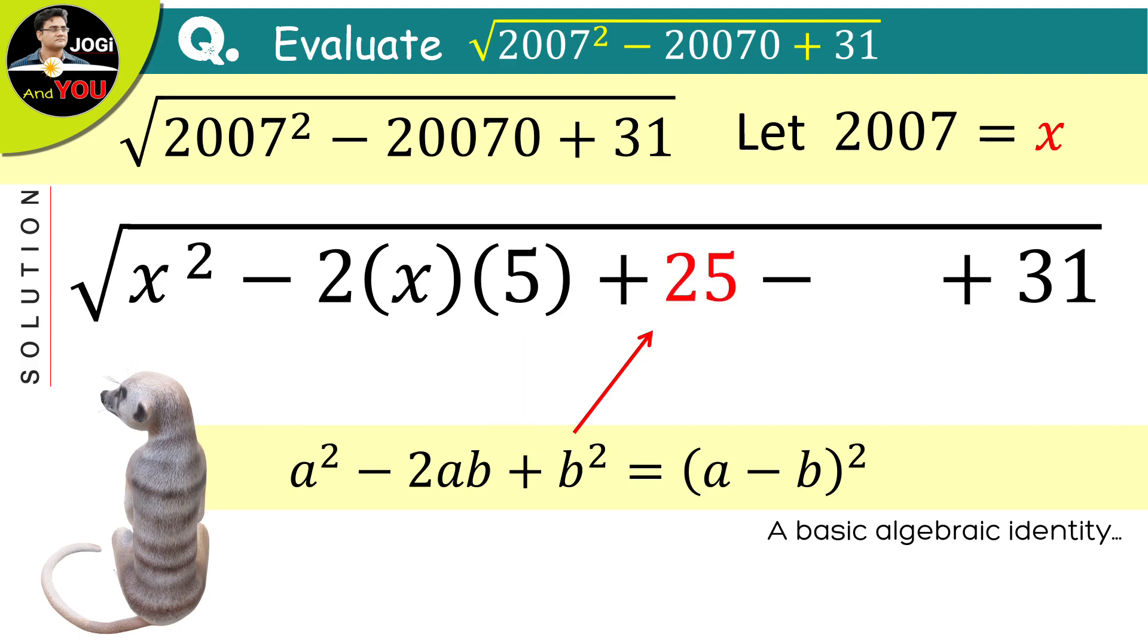But, by doing this, the actual value of your expression will change which is not mathematically accepted and it is not correct. So to balance it out, we will subtract 25 once from here. So that, the value of the original expression is still unchanged.